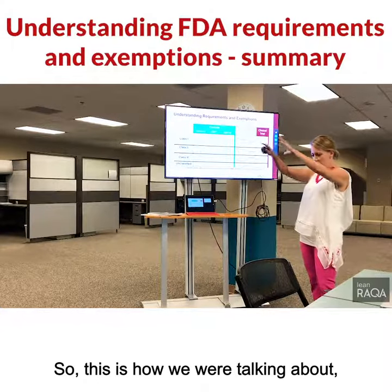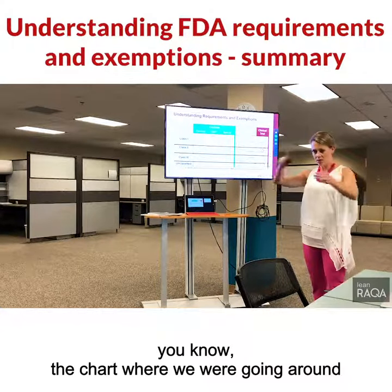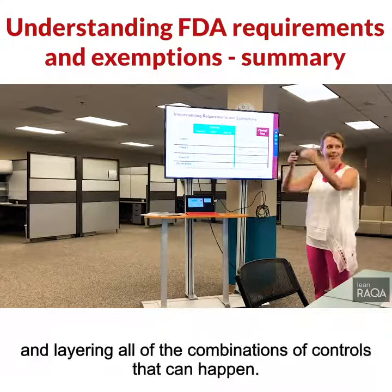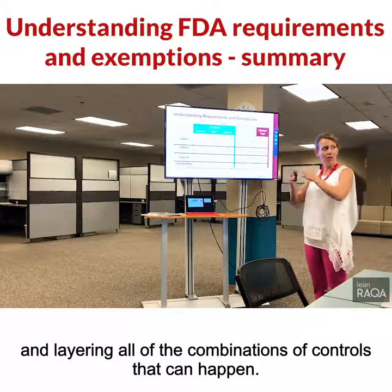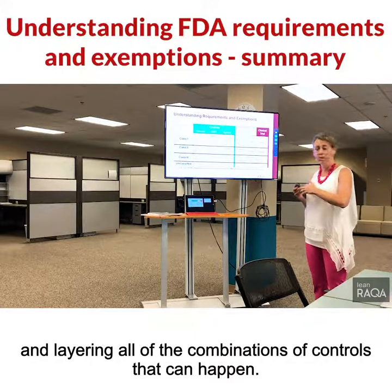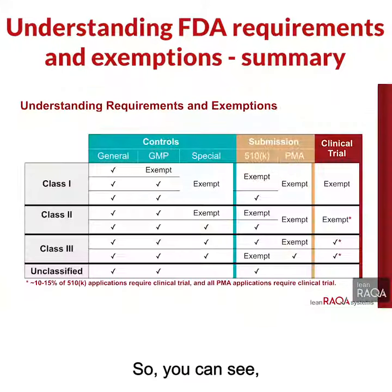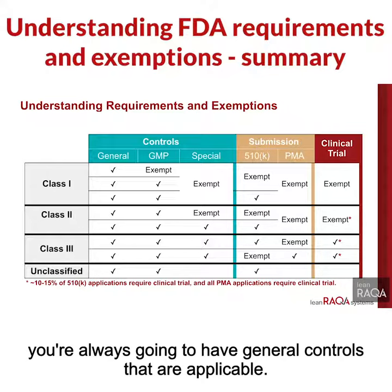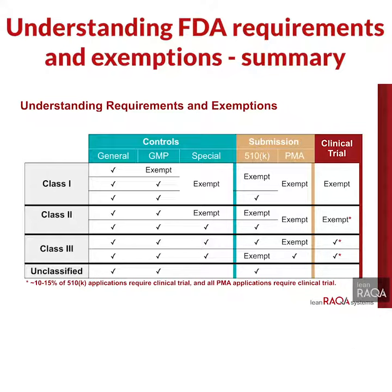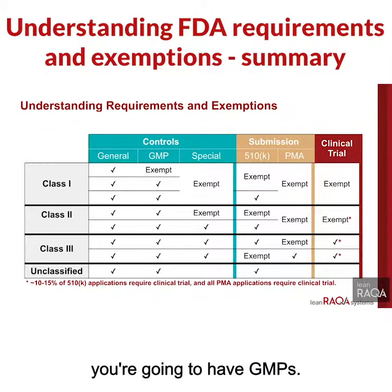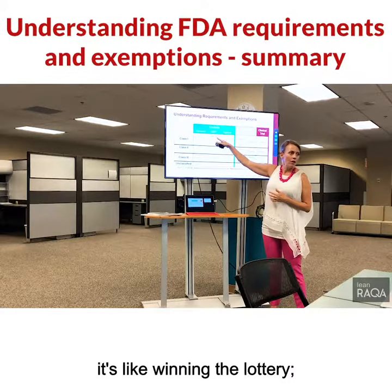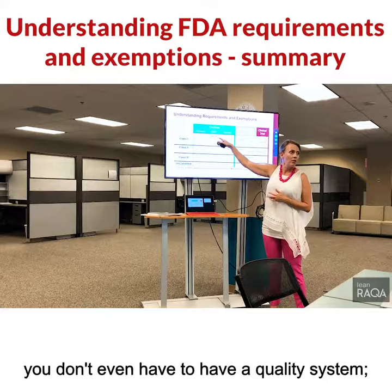So this is how we were talking about the chart where we're going around and layering all of the combinations of controls that can happen. So you can see for class one devices, for all the devices, you're always going to have general controls that are applicable. On top of that, you're going to have GMPs. This is the one where we said it's like winning the lottery — you don't even have to have a quality system.